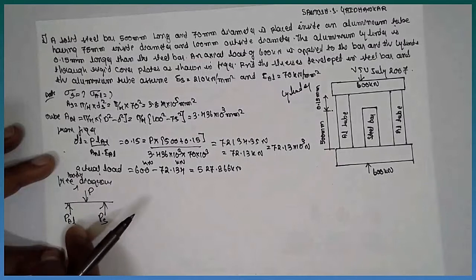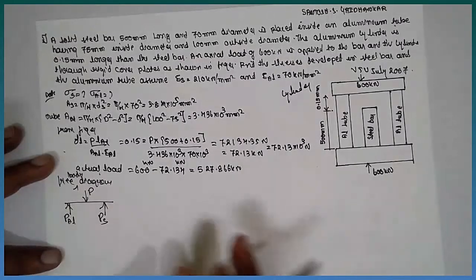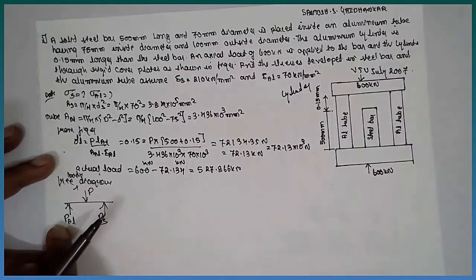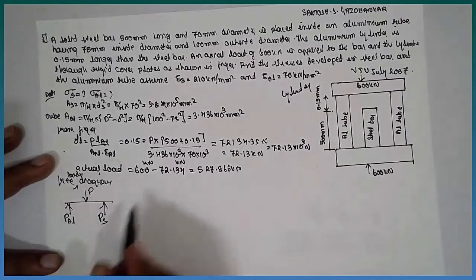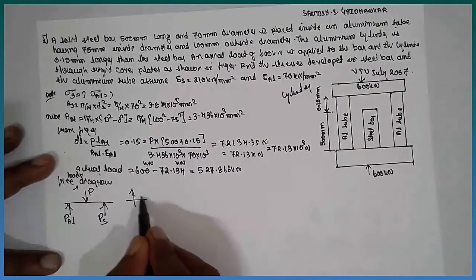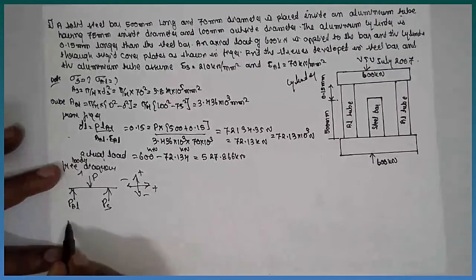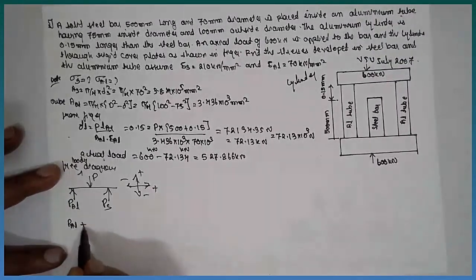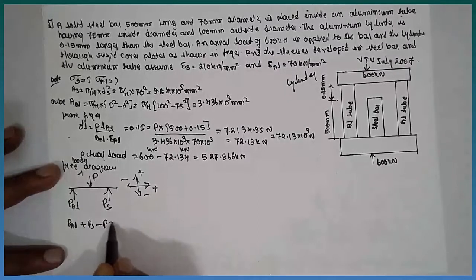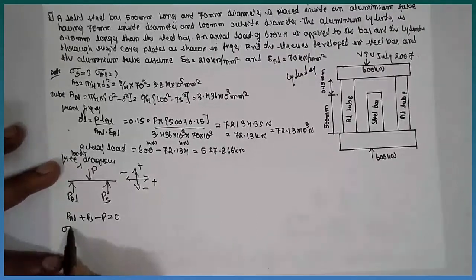If it is a solid section, you have to write P AL, P S, P AL. It is a hollow tube. Therefore, you have to draw a single time. Now, plus sign, minus sign. P AL plus P S minus P is equal to zero.